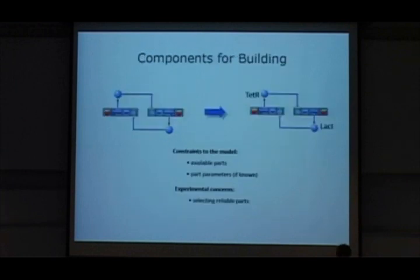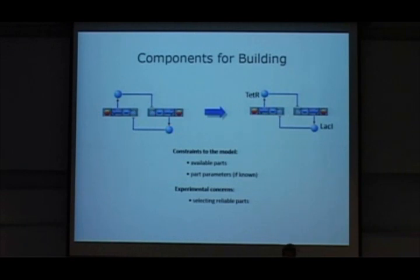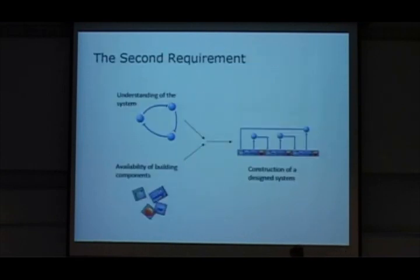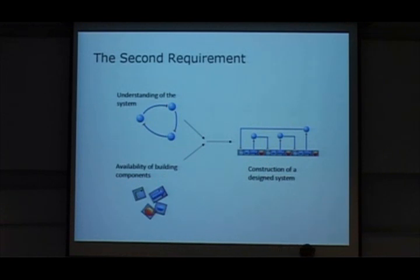The second requirement: suppose you have a well-analyzed system and you want to build it using known parts. You need information about those parts — what's available, what they do, what the kinetics are. An analysis software for synthetic biology should not just understand the system but should also support a database of components or parts, and integrate them into a complete, realistic model that can then be built.